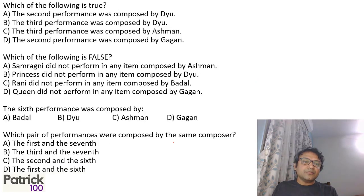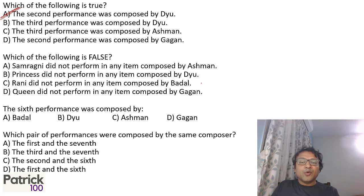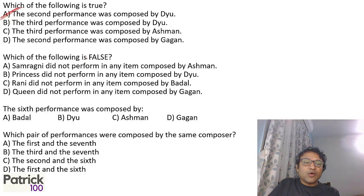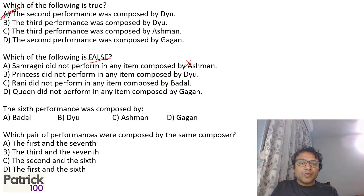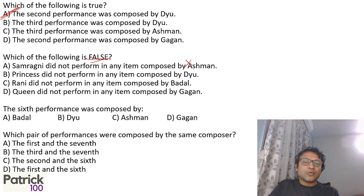Now we answer the questions. Which of the following is true? Second performance composed by Diyu — yes, we got that. Which of the following is false? SA did not perform any item composed by Ashman — if you look at SA, that is true, so it cannot be the answer. Princess did not perform any item composed by Diyu — yes, Diyu did not compose Princess — that is also true, so it cannot be the answer.